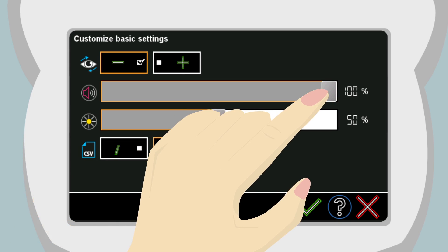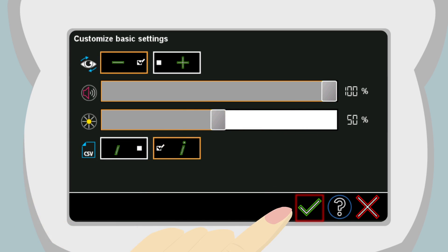Notice that when Anna changes the volume, a green checkmark appears in the navigation bar. Touching the green checkmark saves any changes she has made.